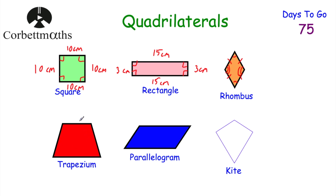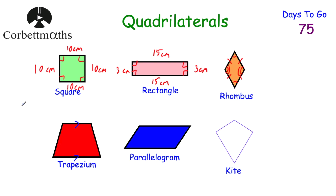A trapezium has one pair of parallel lines — for example, the top is parallel to the bottom. It doesn't always have to be that orientation; the parallel sides could be positioned differently. This particular trapezium has a line of symmetry, but not all trapeziums do — you could easily draw one without a line of symmetry. It has rotational symmetry of order one.